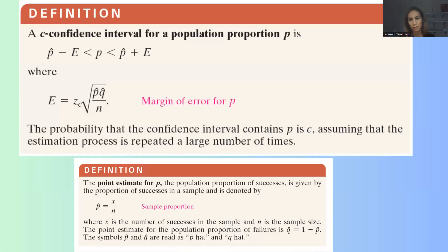In constructing a confidence interval, after finding the point estimate, we are interested in knowing what is a c-confidence interval for population proportion p?